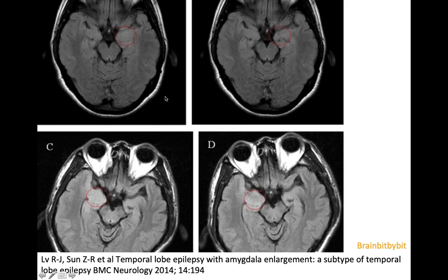The outcome from enlarged amygdala after therapy is also very diverse. These two patients both had amygdala enlargement, and after one year of medical treatment, the amygdala enlargement normalized in the upper row, whereas it persisted in the lower row.